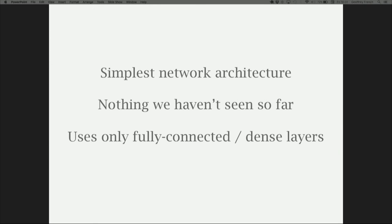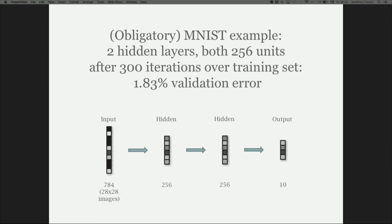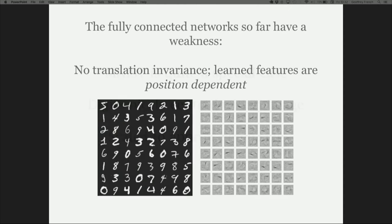The multi-layer perceptron is the simplest neural network architecture — nothing we haven't seen so far. It uses only fully connected or dense layers, where each unit is connected to every single unit in the previous layer. To pick up from Tariq's talk, the MNIST handwritten digits dataset is a good place to start. A neural network with two hidden layers of 256 units each, after 300 iterations, gets about 1.83% validation set error — roughly 98.17% accuracy, which is pretty good.